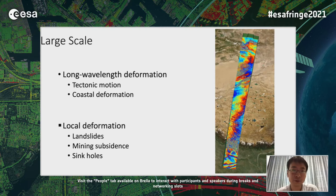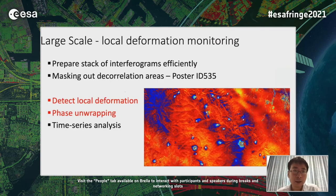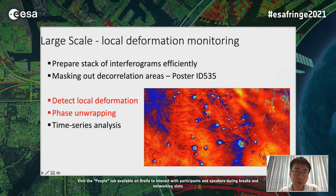With such large-scale interferograms, we are interested in two kinds of signals. One is a long-wavelength deformation signal such as tectonic motion and coastal deformation. The other is local deformation sparsely distributed in large-scale interferograms — for example, active landslides, mining subsidence, or sinkholes. Today in my talk, I will focus on how we can more efficiently handle this local deformation in large-scale interferometry.